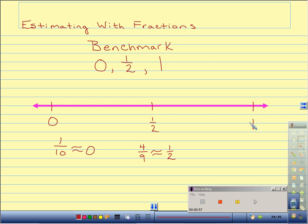The description for a benchmark of 1 whole is when the numerator and the denominator are very close to each other. For example, 8 ninths. The 8 is very close to the 9, therefore it would benchmark to 1 whole.